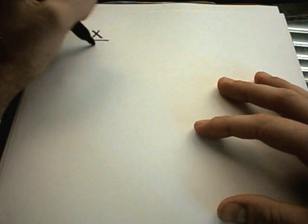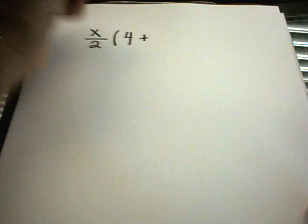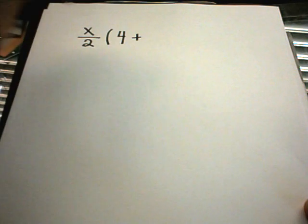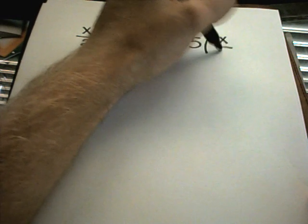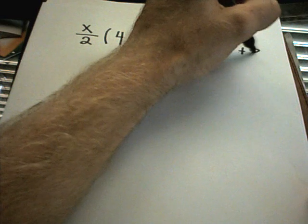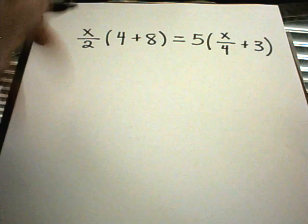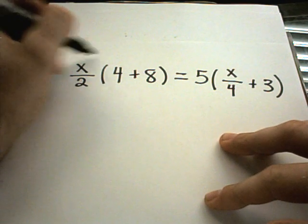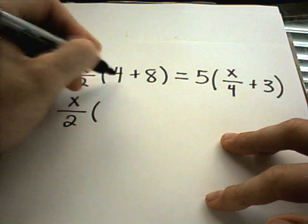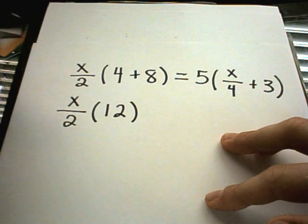Alright, let's do a more complicated example. Suppose I have x divided by 2 times (4 plus 8) equals 5 times (x over 4 plus 3). Okay, so again, I've got a linear equation. I do have fractions floating around, but that's okay. I could distribute the x over 2 to both terms, but instead, since I see something in the parentheses that I can combine, I'm just going to combine that straight away. So 4 plus 8 is 12.